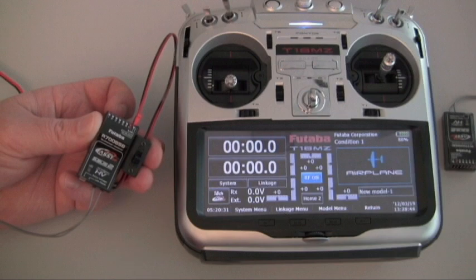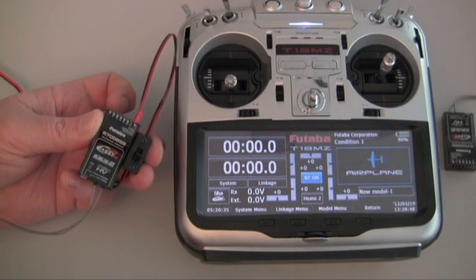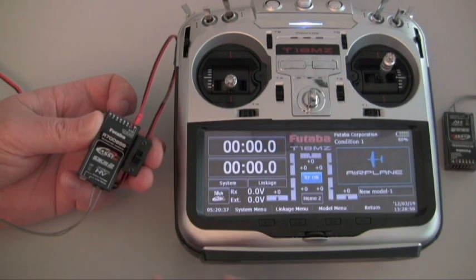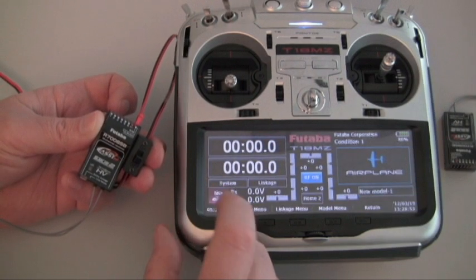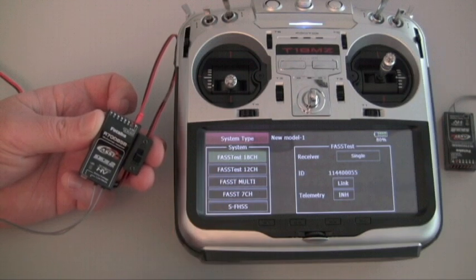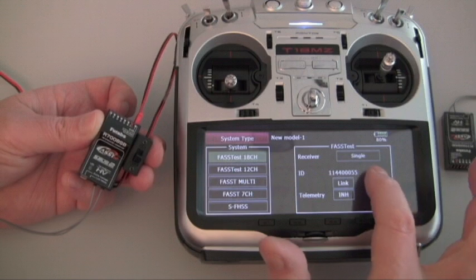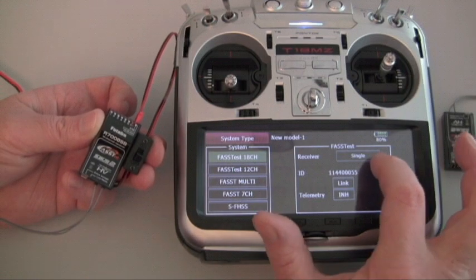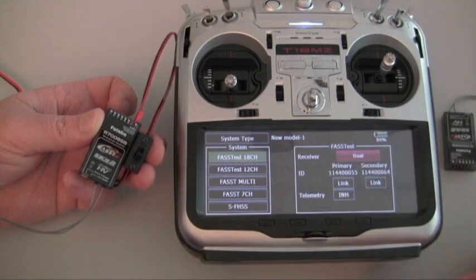On the transmitter side of things we're going to now go through the process for linking our two different receivers to the transmitter. We're going to go into system type simply hitting this little icon right here. We want to be in FASST 18 channel mode. Coming over here we want to select dual receivers. Hit dual, confirm yes.